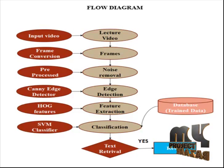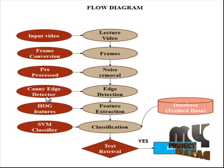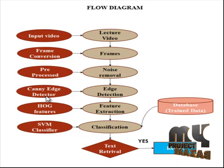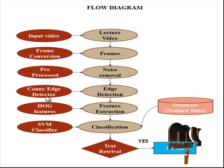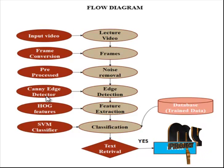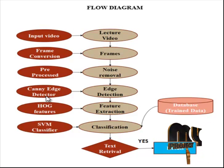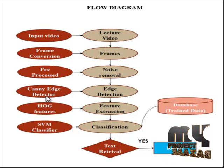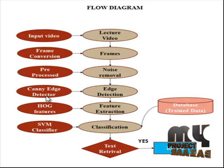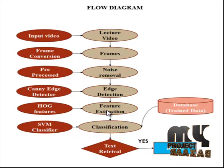Canny edge detection is a four-step process. First, Gaussian blur is applied to clear any speckles and remove noise from the image. Then a gradient operator is applied to obtain the gradient's intensity and direction. Non-maximum suppression determines if a pixel is a better candidate for an edge than its neighbors. Next is the feature extraction process.